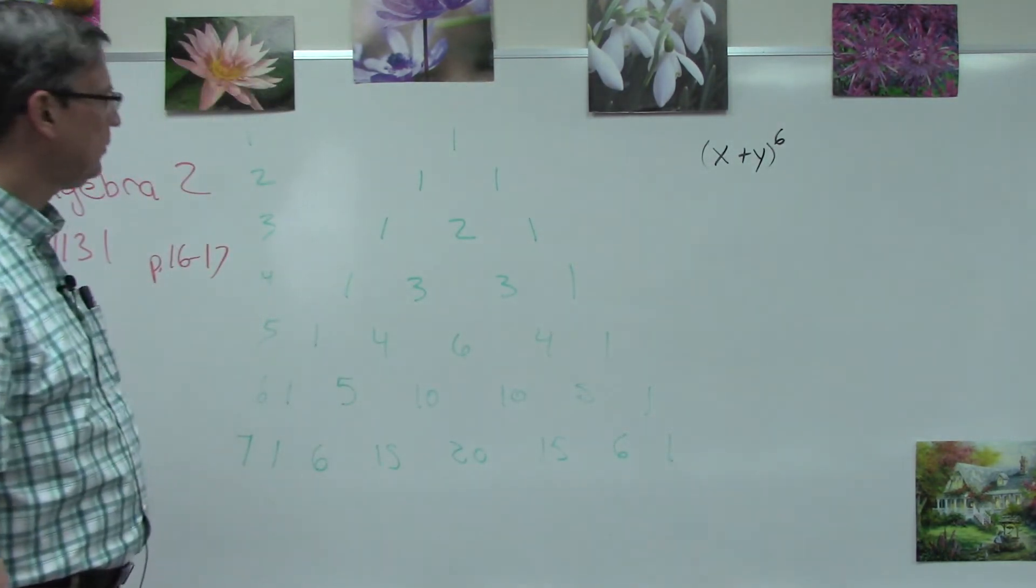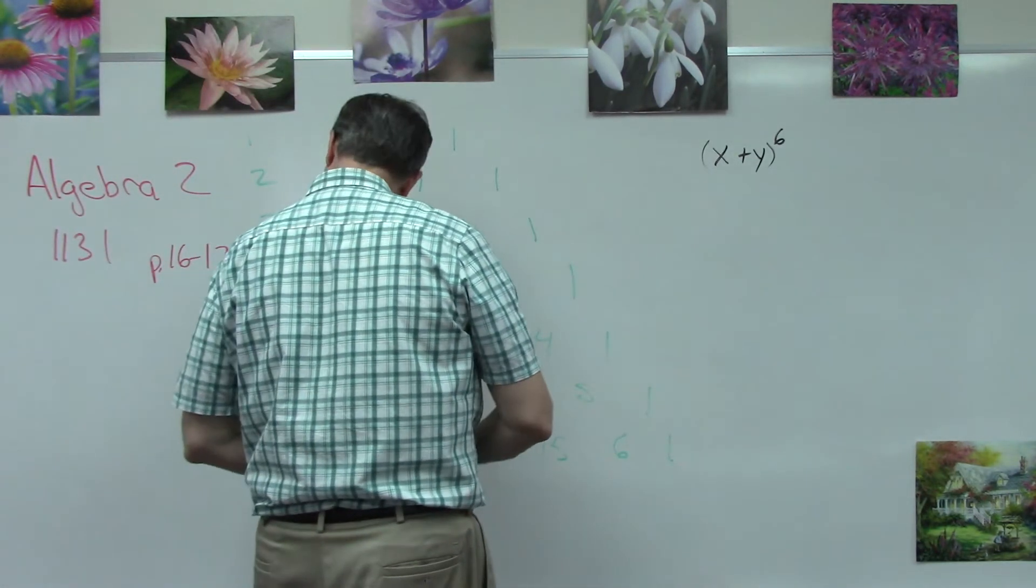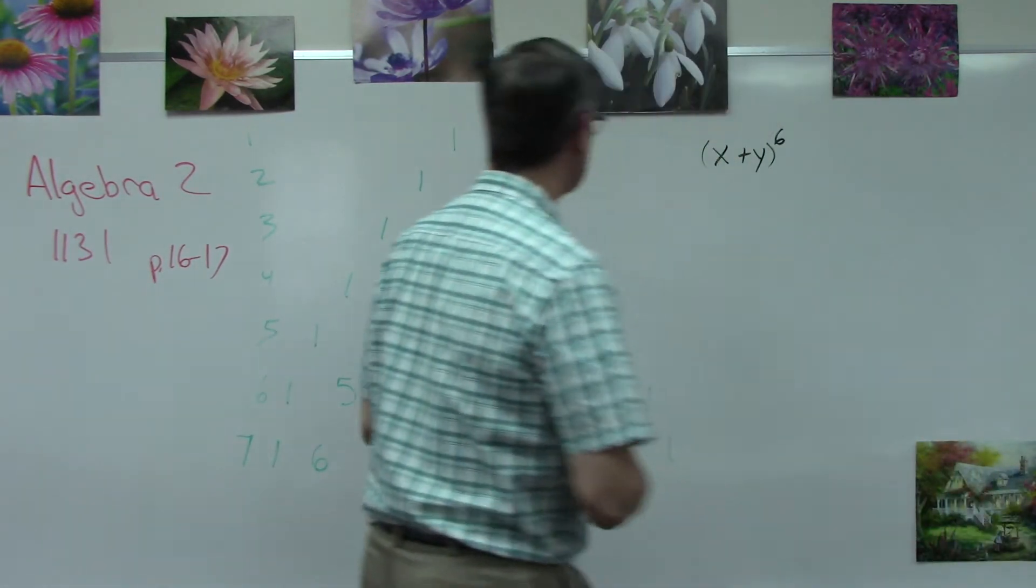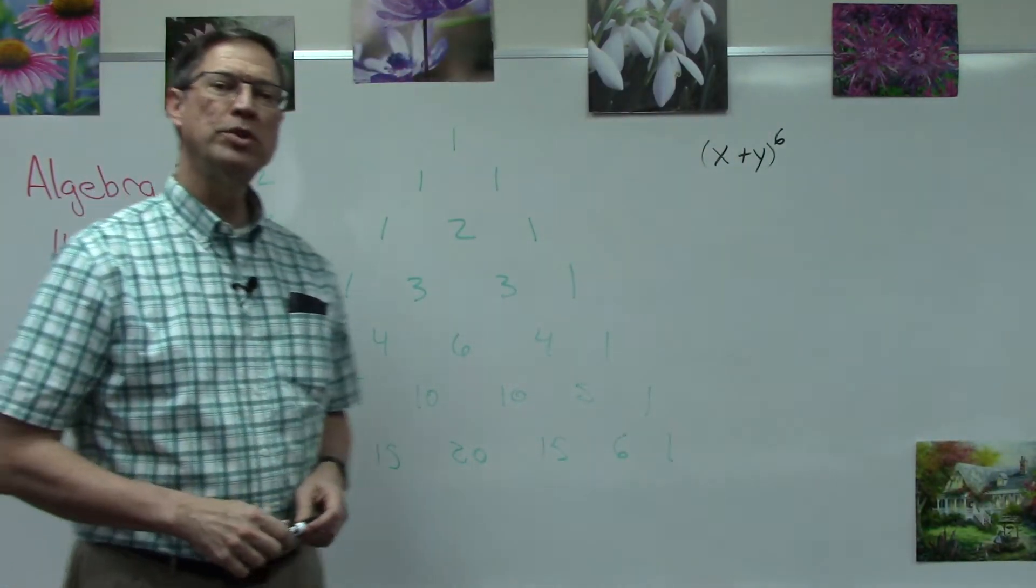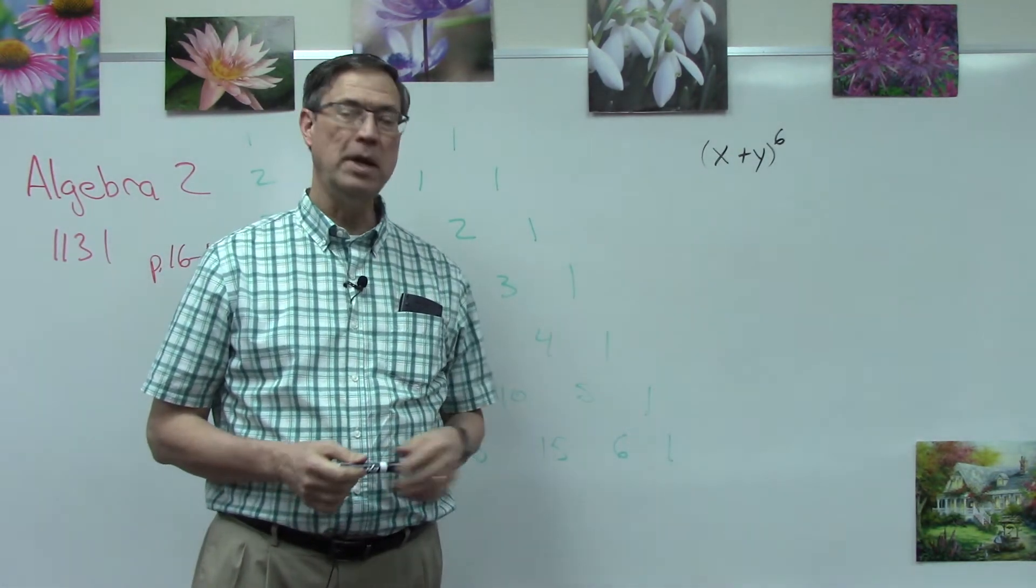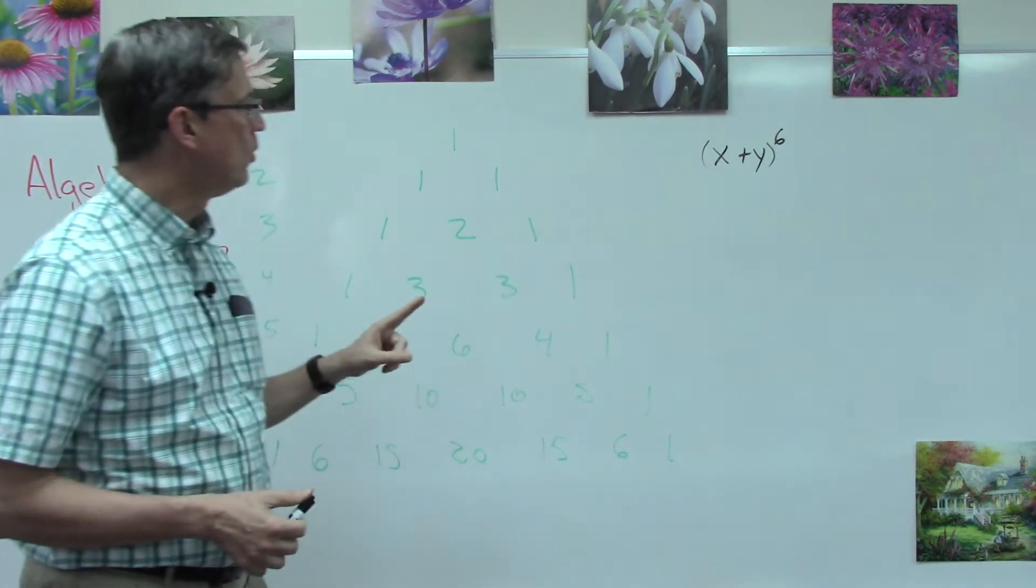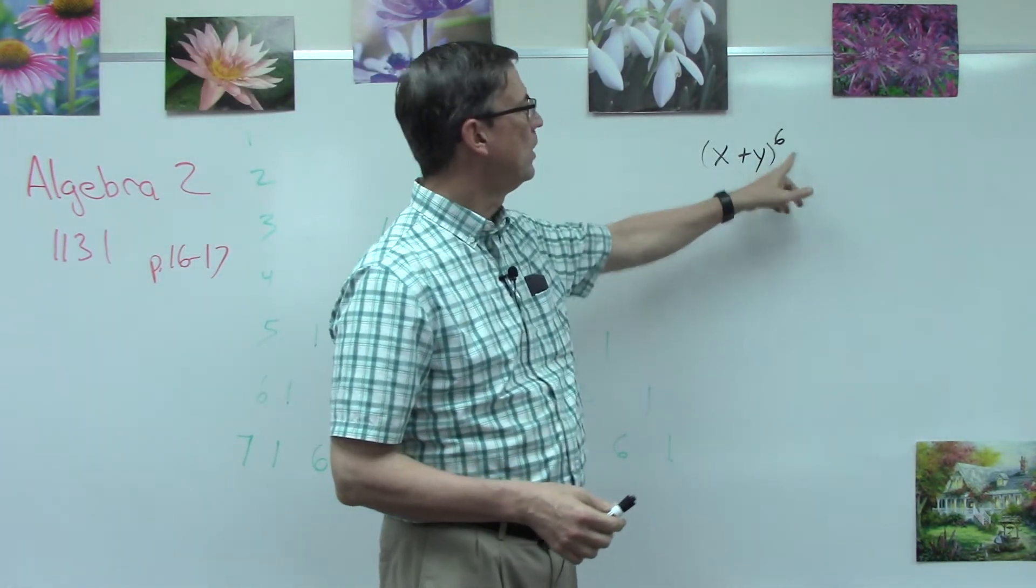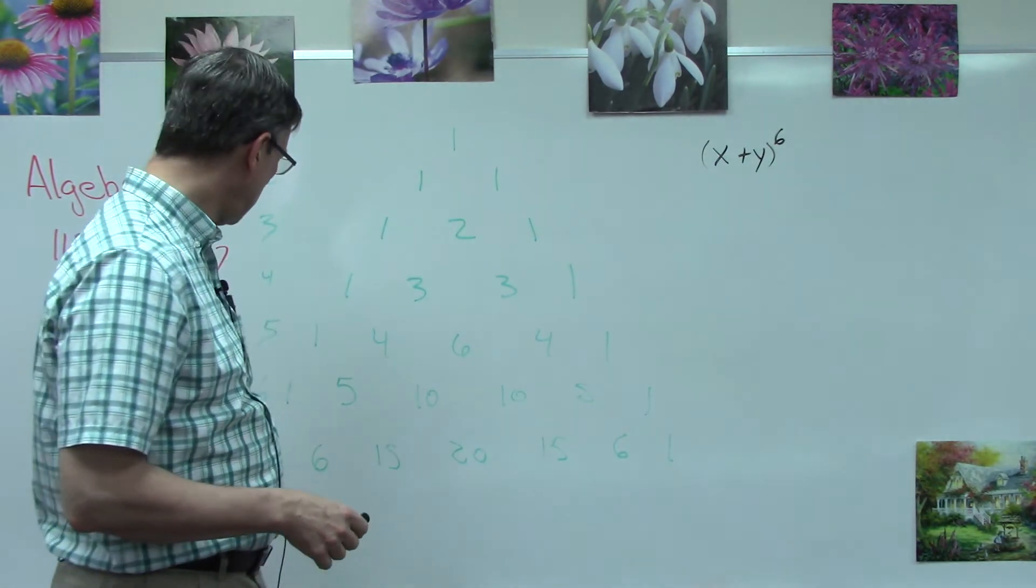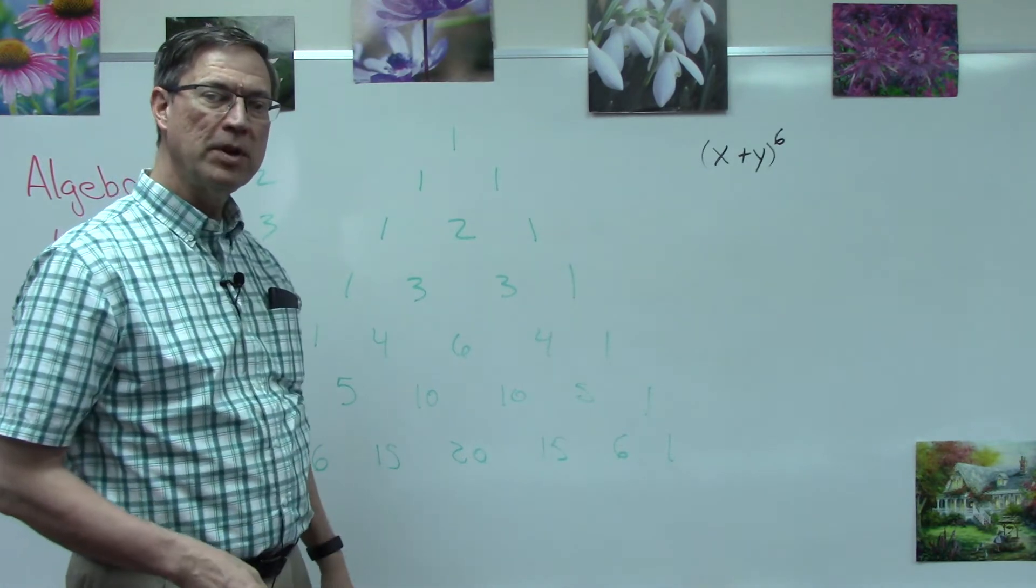x plus y to the sixth power. How do we know which row we're supposed to use? As you read over the page, you'll find out that we always add one. There's always one more term in our answer than what our exponent is. So if the exponent is six, then I need to use row seven. Watch this, I'm going to start way over here because it's going to get long.